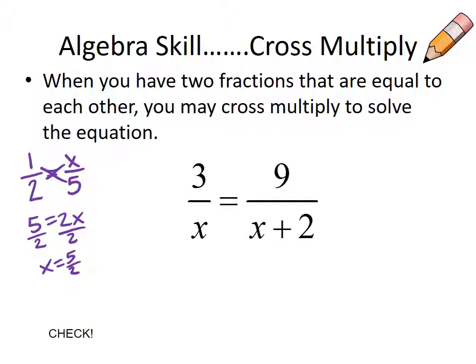So I take a look at this first example. If I write it out, I have a 9 times an x equals a 3 times an x plus 2. Now that x plus 2 is a factor, so you're going to make sure to distribute that 3.